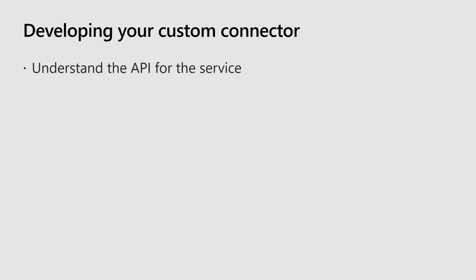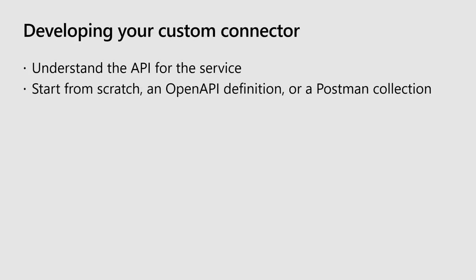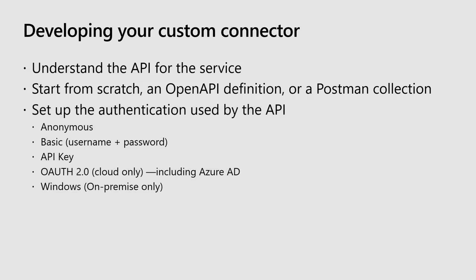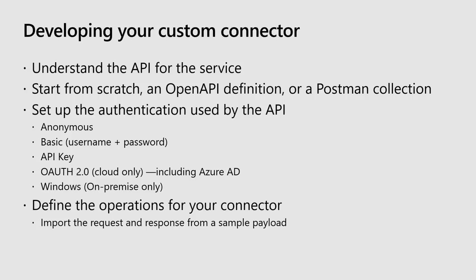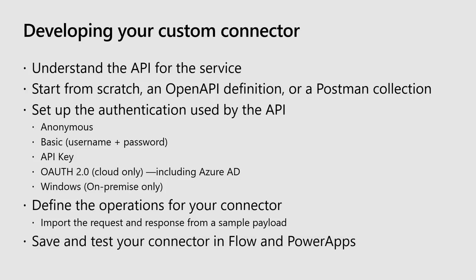Let's recap developing your custom connector. First you need to understand the API - it needs to be a RESTful API. You can create a connector from scratch like we did today, from an Open API definition, a Postman collection, or from an Azure service. You specify the authentication type required by the API. Then you define the operations and import the sample payload for the request and response. Finally you save it, create it, test it, and start using it in flows and Power Apps.